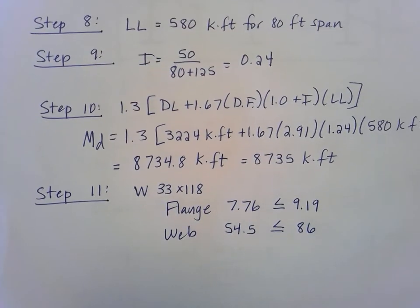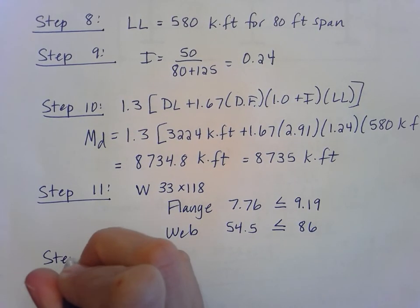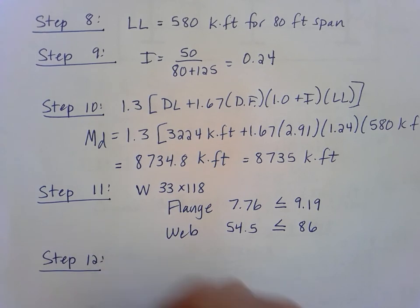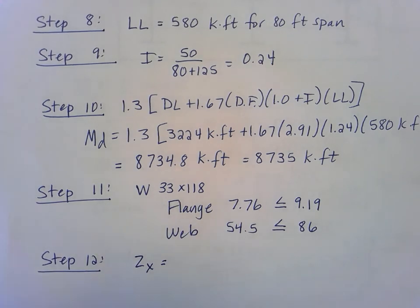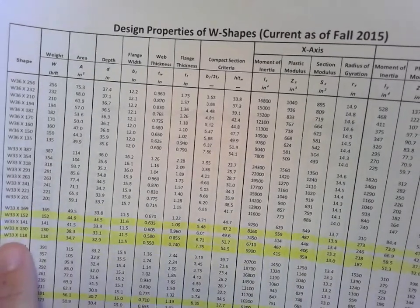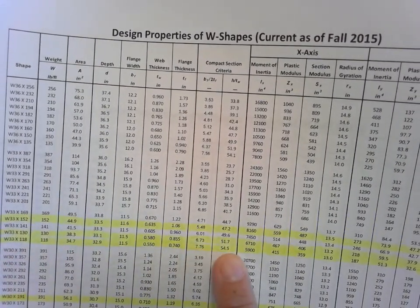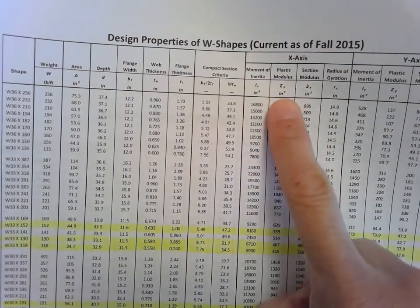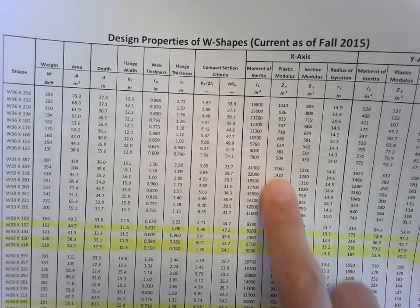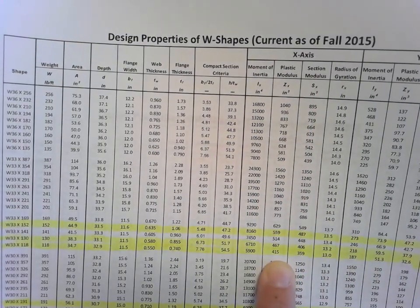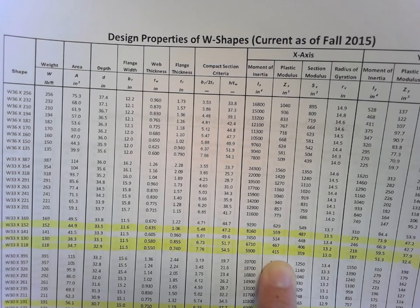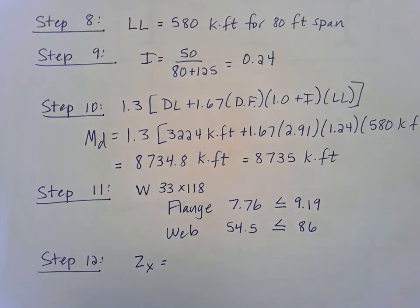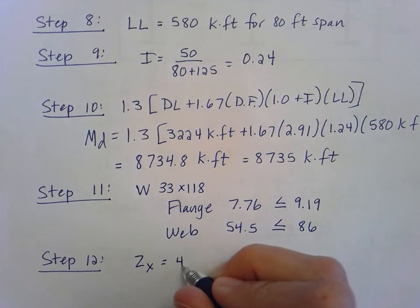Last step: is the beam going to work? Let's go back to that girder table and pick off a value for the plastic modulus, the Z sub X from this table that I'm using. For the W33 by 118, I come over here to my x-axis plastic modulus, Z sub X in inches cubed, and I wind up with a value of 415 inches cubed for my plastic modulus from this girder. Let's write that down: 415 inches cubed.